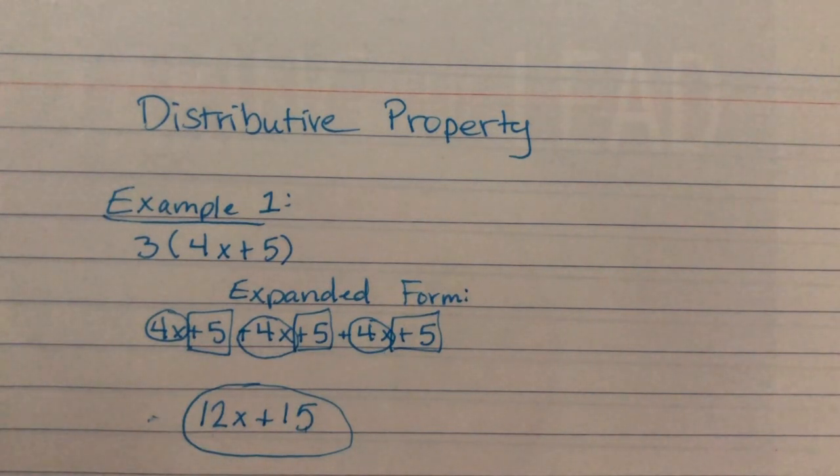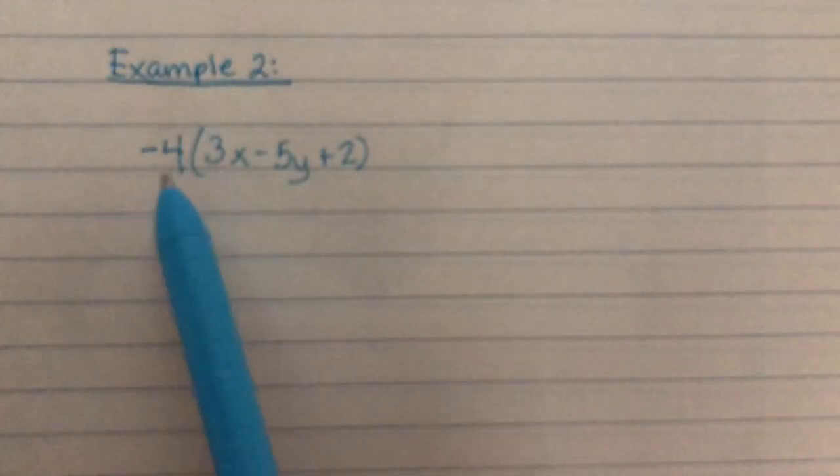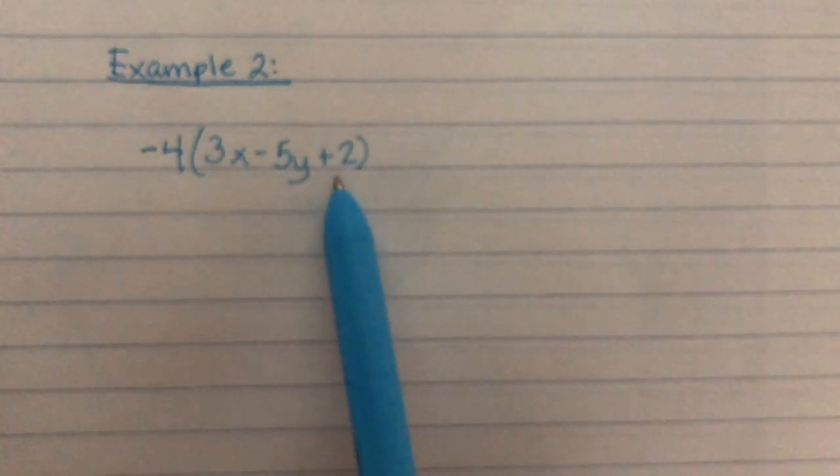Let's use this strategy in a second example where we have negatives. So, here's our second example. We have negative 4 times 3x minus 5y plus 2.